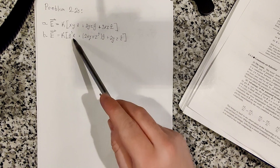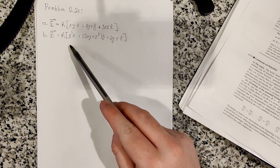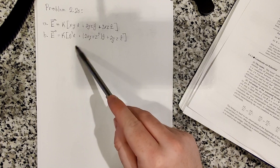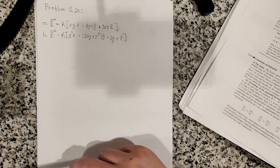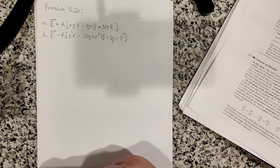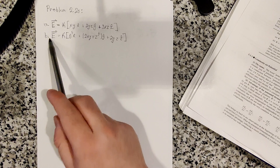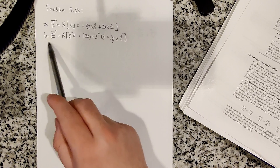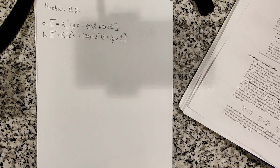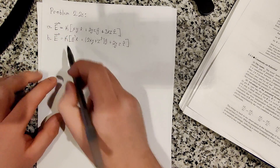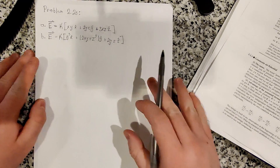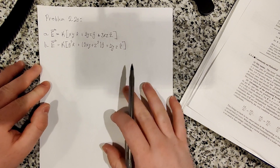When we find the one that is a possible electrostatic field, they want us to check by finding the potential of the electric field and then verifying it is correct by taking the gradient of the potential to get back the electric field. To figure out if it's a possible electrostatic field, we know that electrostatic fields have a curl of zero.